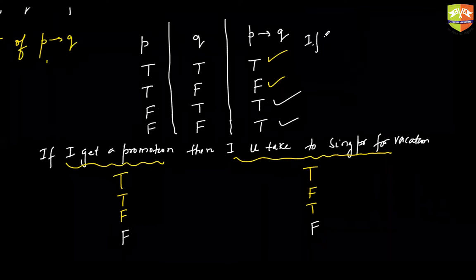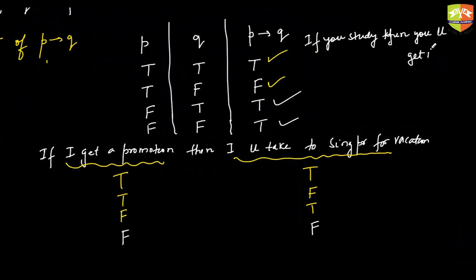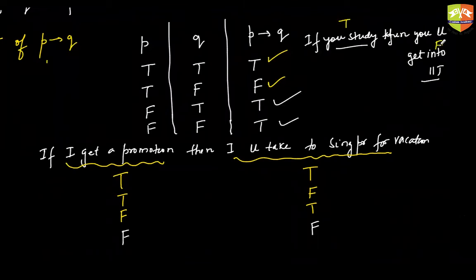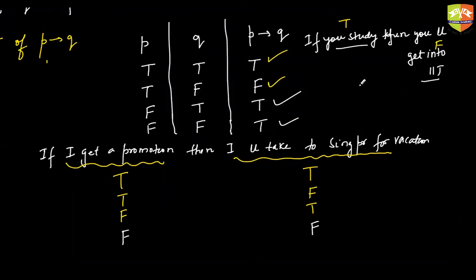Another example: 'If you study, you will get into IIT.' If you studied and got in — no problem, true. If you studied and didn't get in — you will come and complain, so the implication is false. If you didn't study but still got in — the antecedent is false, so the implication is still true. If you didn't study and didn't get in — the statement is satisfied, true. The implication is false only when the antecedent is true but the consequent fails.